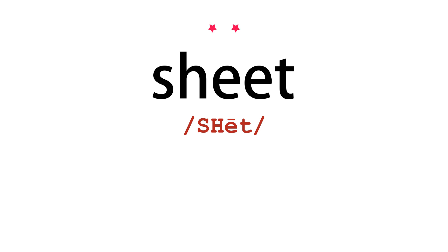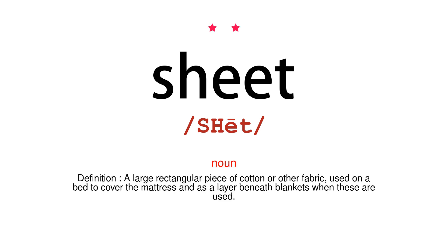Sheet. Noun. Definition: a large rectangular piece of cotton or other fabric, used on a bed to cover the mattress and as a layer beneath blankets when these are used.